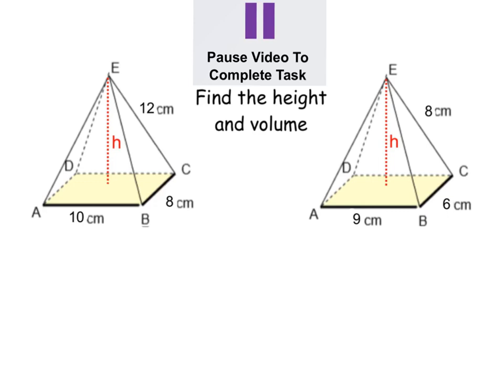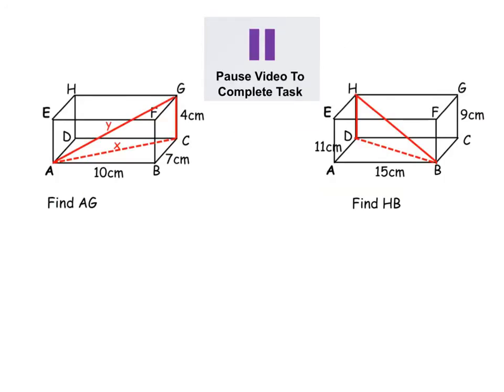Here are some for you to try on your own. I've got two examples here, like my pyramid ones. I'd like you to pause the video and try these. You can do it using base triangle and then my little red triangle, or you could, if you've seen vectors and are happy with that method, you could do it all in one go. Square root of 10 squared, seven squared and four squared for that one. Give it a try and then check your answers.